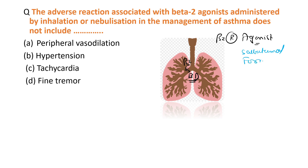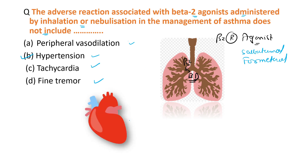The answer to this question is hypertension. Because in our heart there is a presence of beta-1 receptors. When we give a beta-2 agonist drug, it stimulates beta-2 receptors, so the heart is not affected. That's why beta-2 receptor agonists cannot cause hypertension. So the answer is option B.